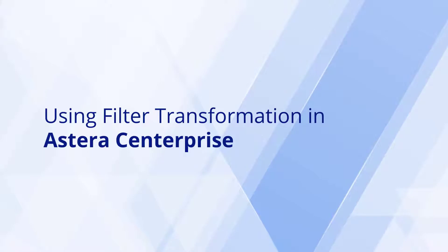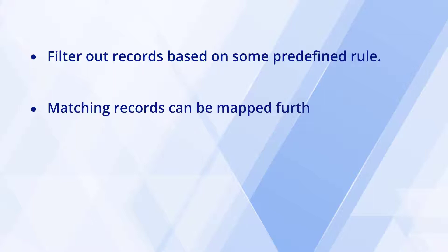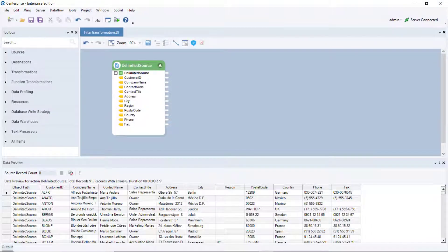In this video we are going to learn about how you can use the filter transformation object in Estera Centerprise. Filter transformation in Estera Centerprise is used to filter out records based on some predefined rule. The records that match the specified rule are filtered out and can be mapped further in the data flow, whereas the records that do not satisfy the specified condition are omitted. The rule or logic to filter out records can either be chosen from an extensive library of fields and functions, or you can write one of your own. Let's see how filter transformation works in Centerprise.